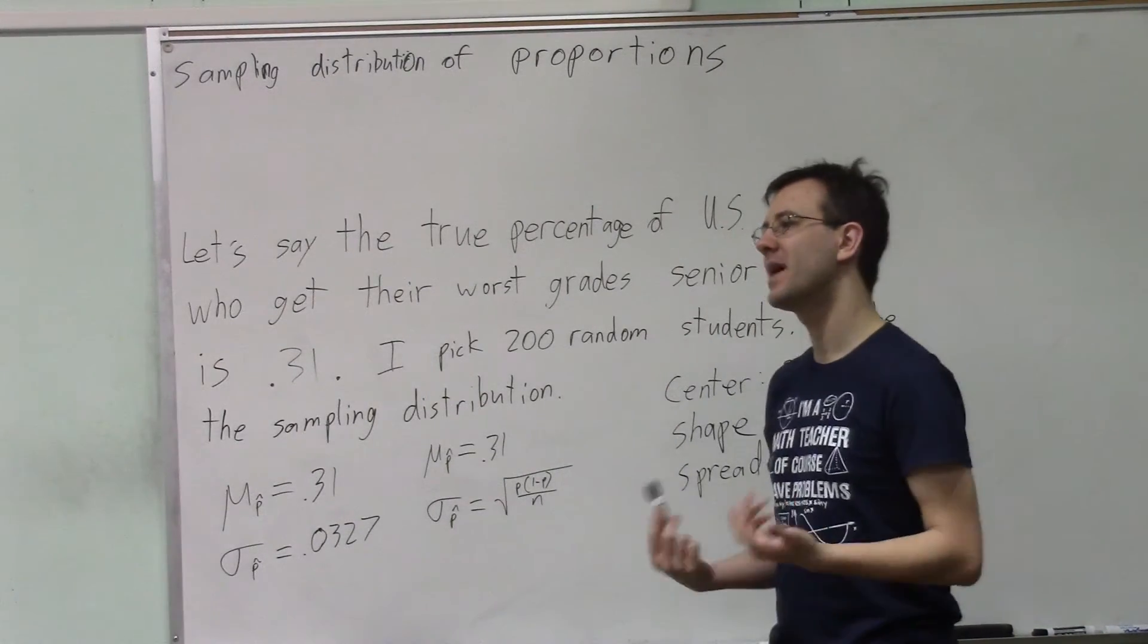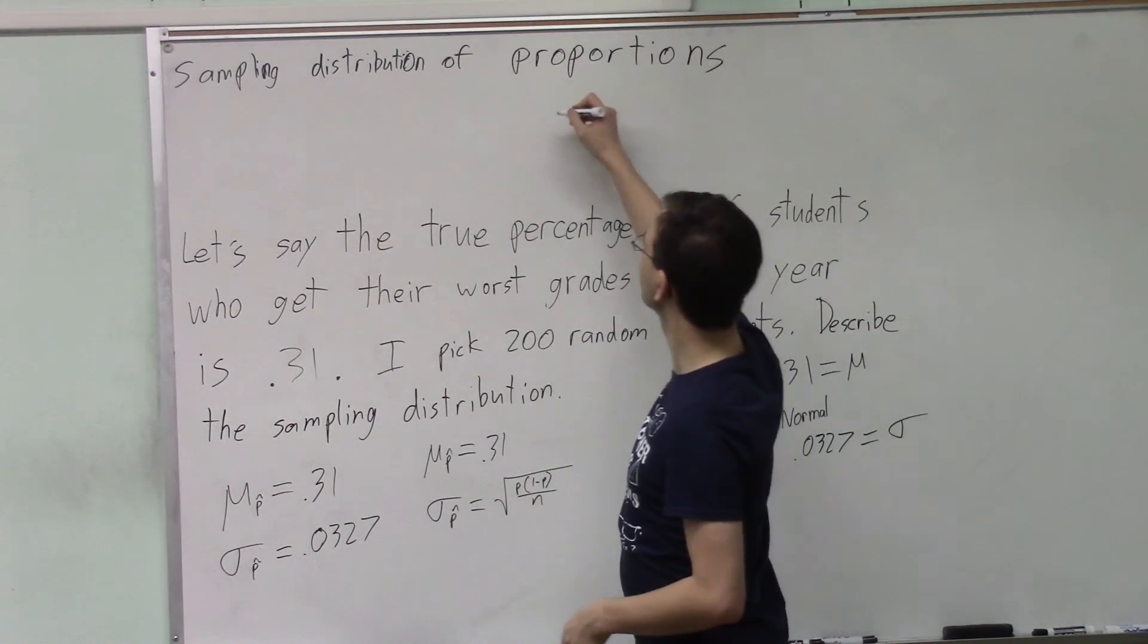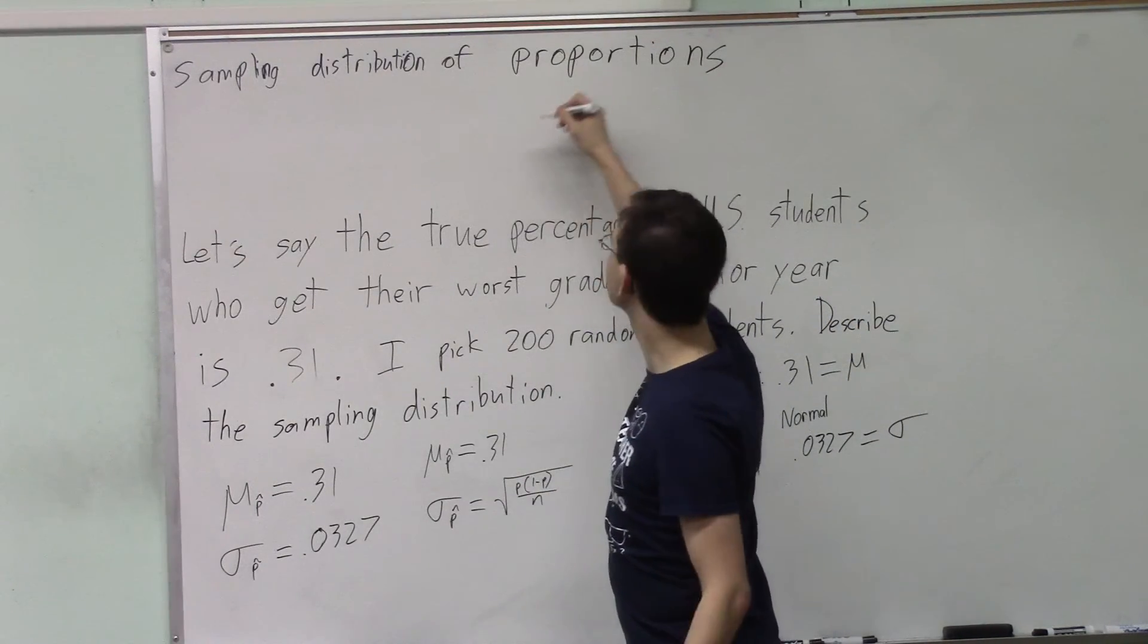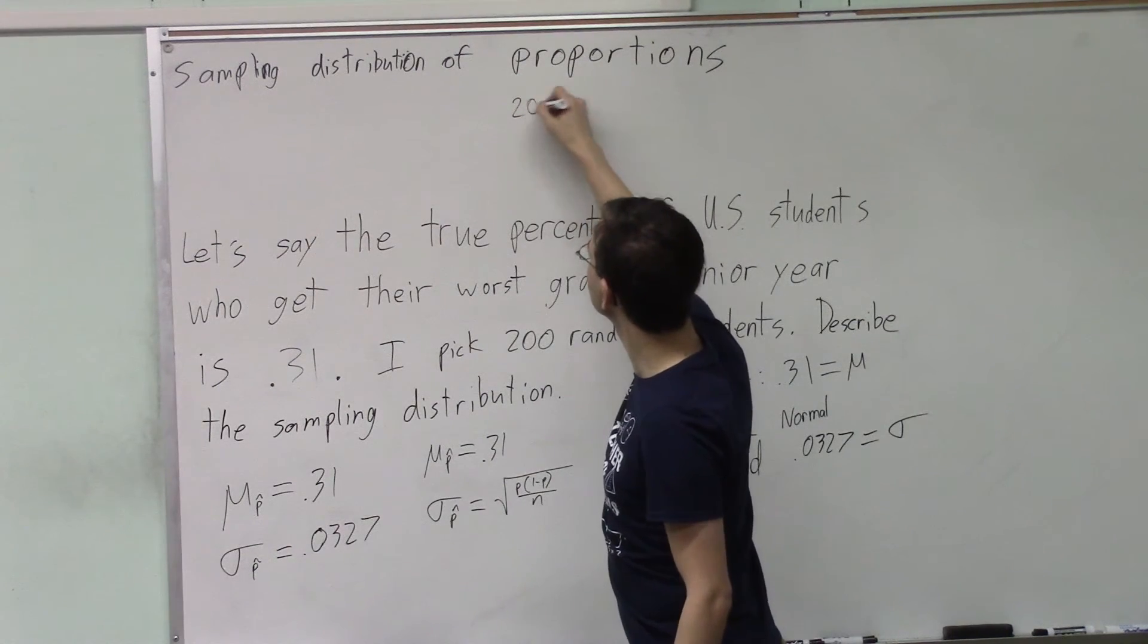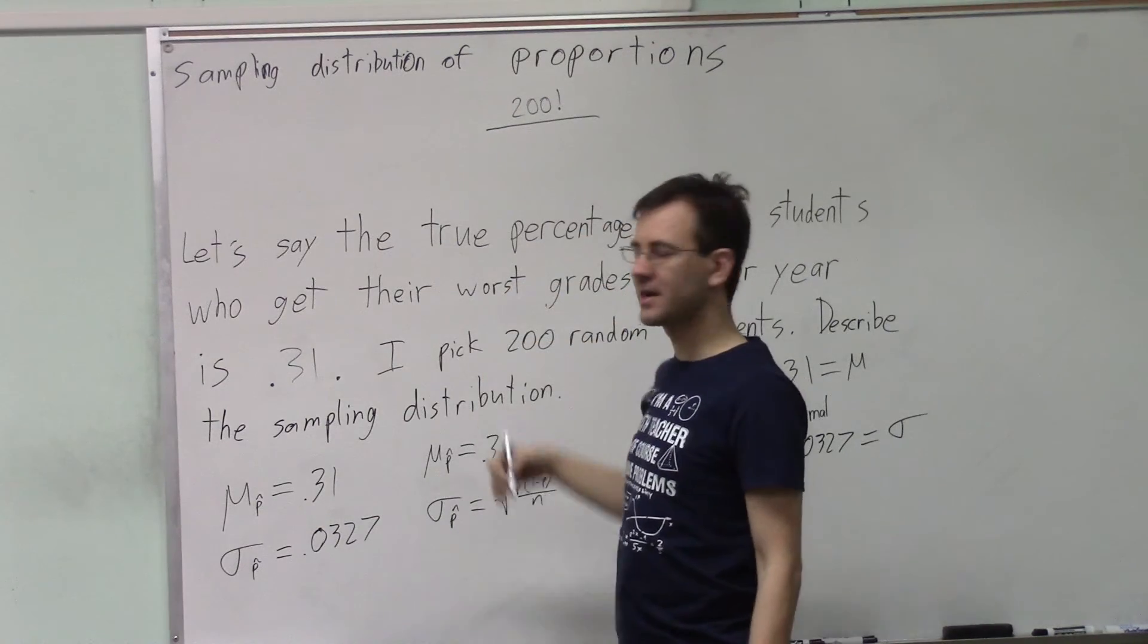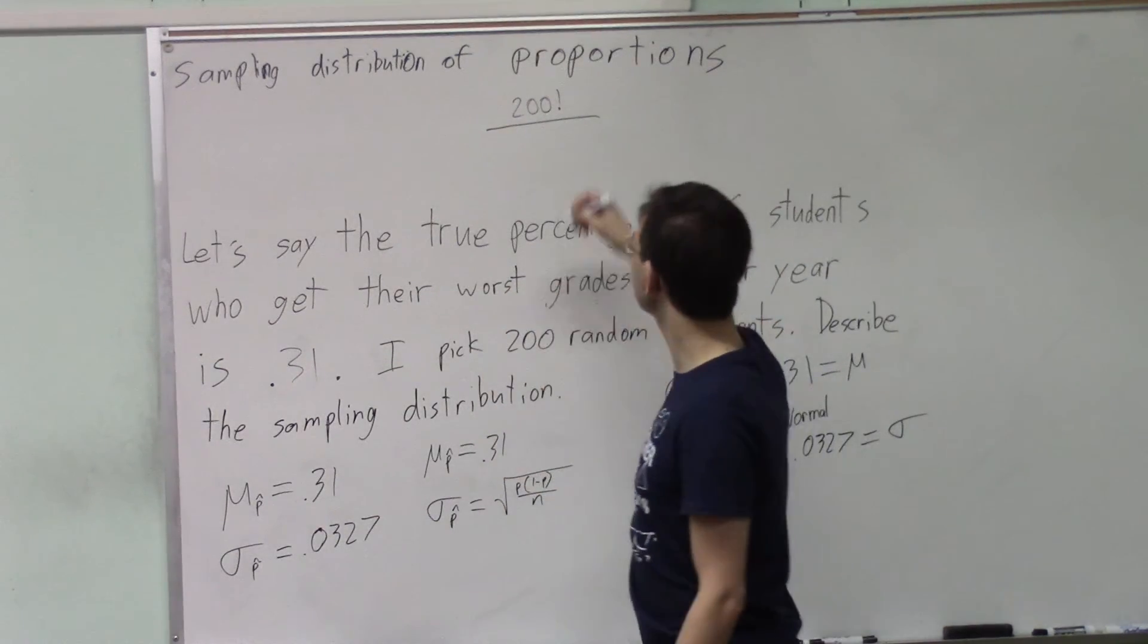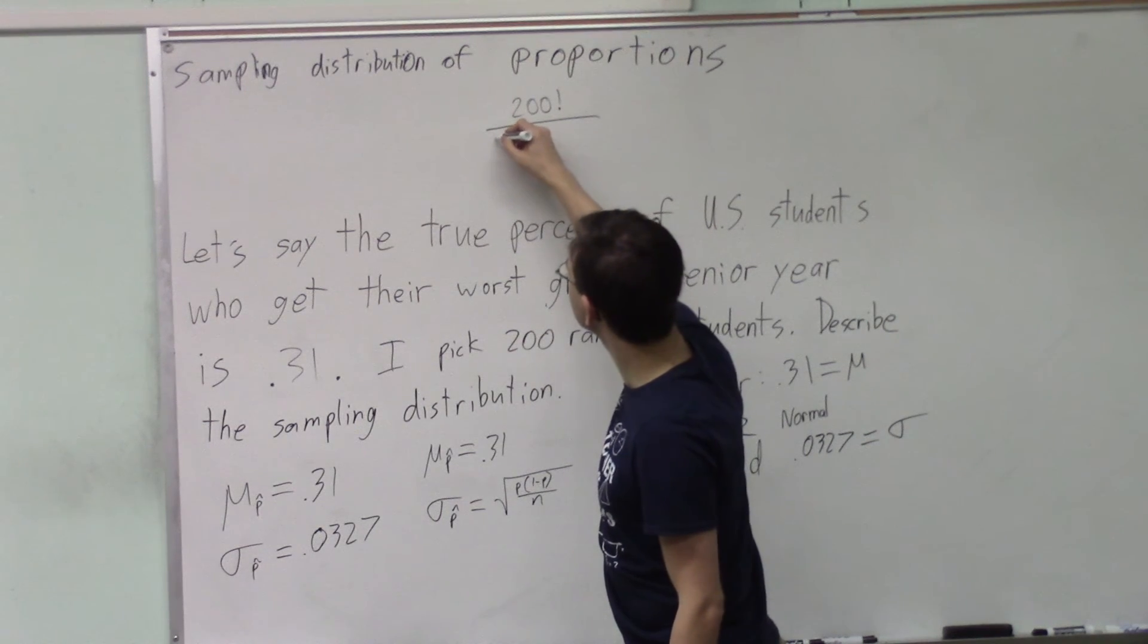Because the problem is, with the binomial distribution, imagine a sample of 200. Think about what that formula would look like when you plug it into the calculator. 200. What is the probability that I will end up with like 150 people who have their worst grades senior year? 150 factorial. Your calculator probably won't be able to handle 200 factorial. Like, that number is just too big.